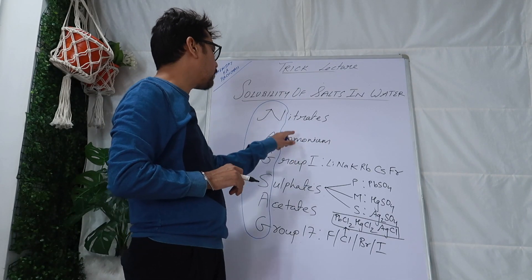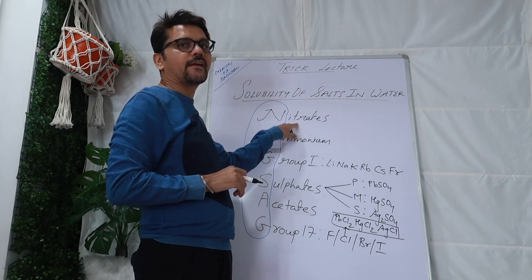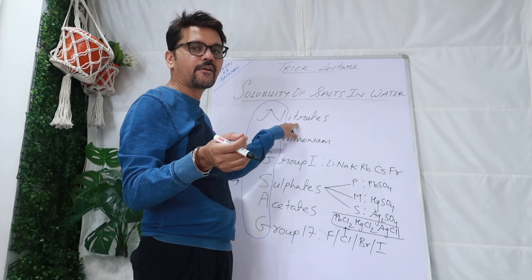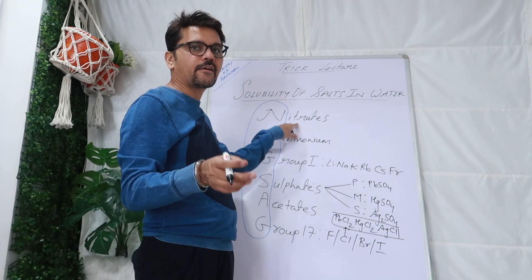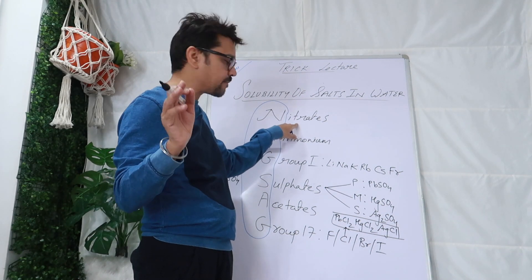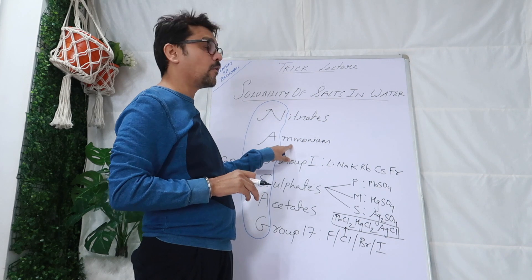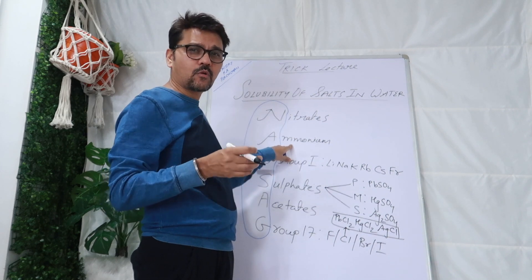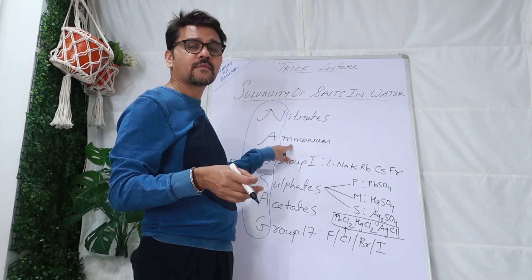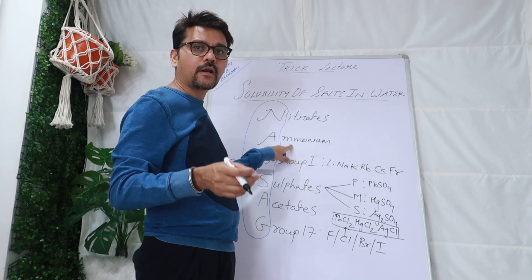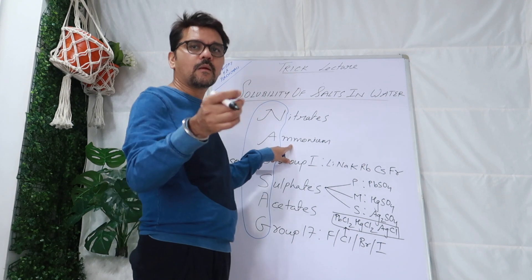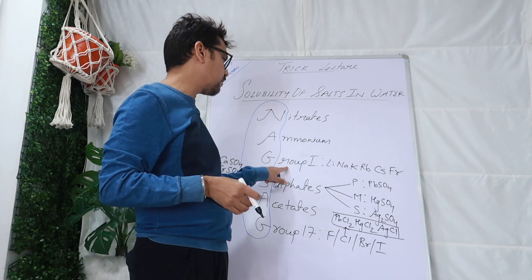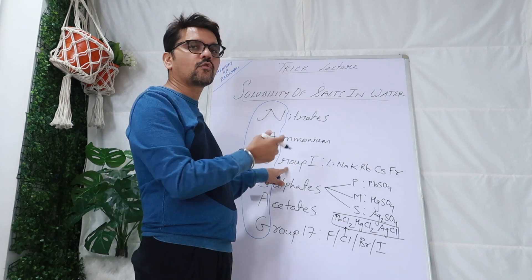All nitrates are soluble in water — potassium nitrate, calcium nitrate, any nitrate. All ammonium salts are soluble in water — ammonium chloride, ammonium carbonate, ammonium sulfate, ammonium phosphate — all soluble in water. Group 1 salts are all soluble in water — no exceptions.